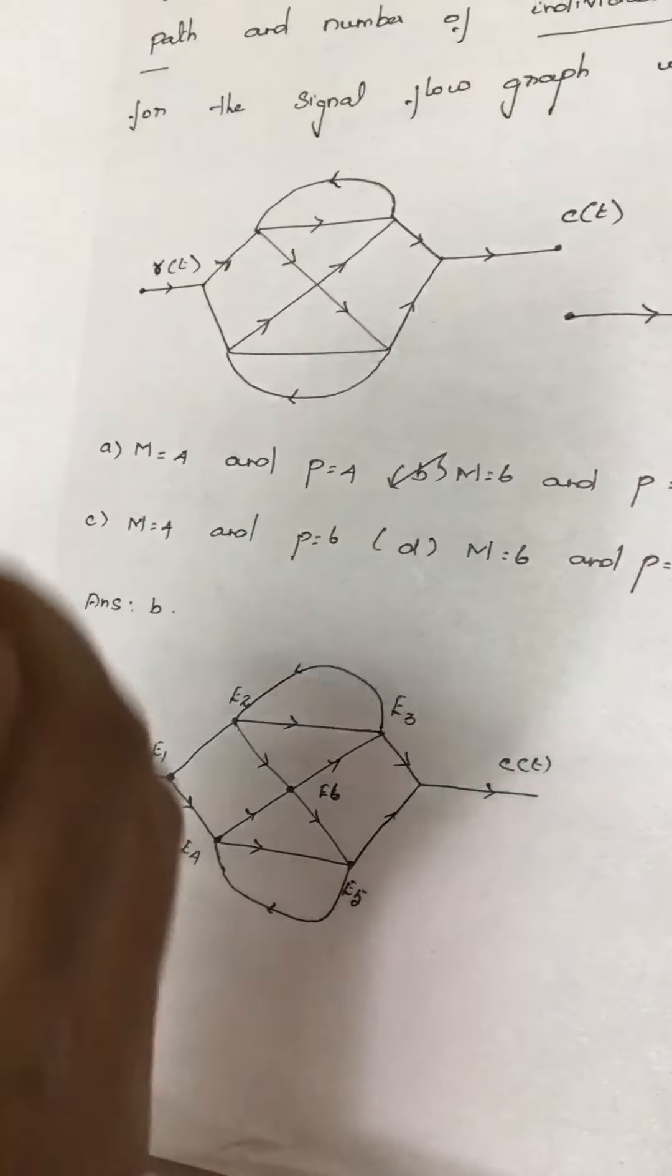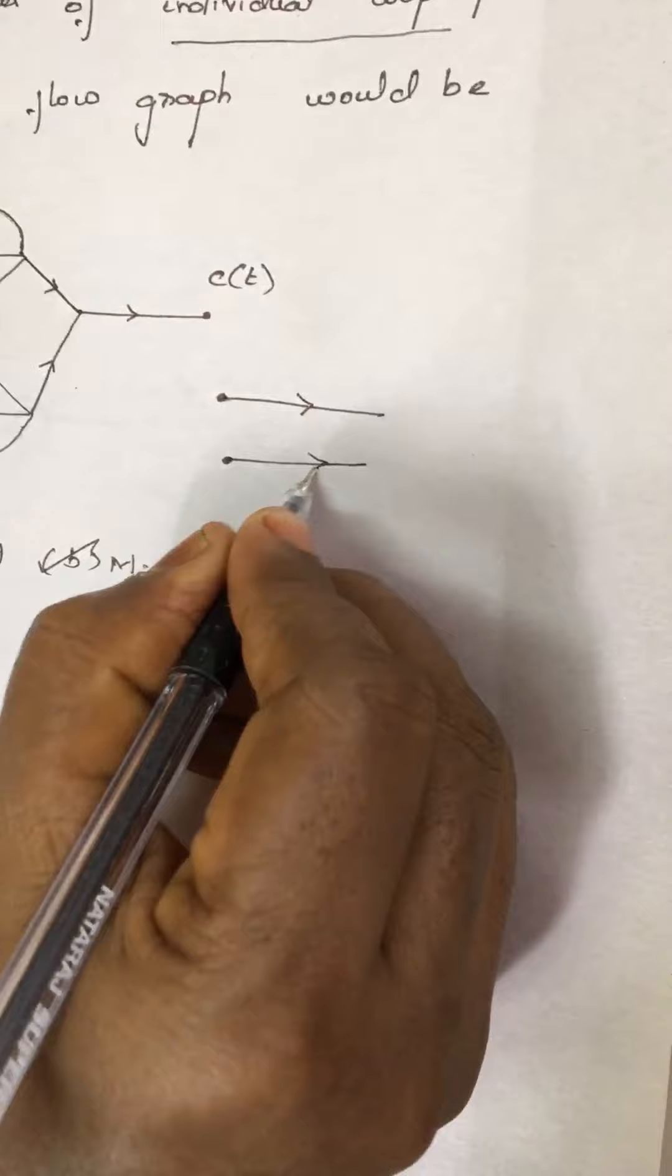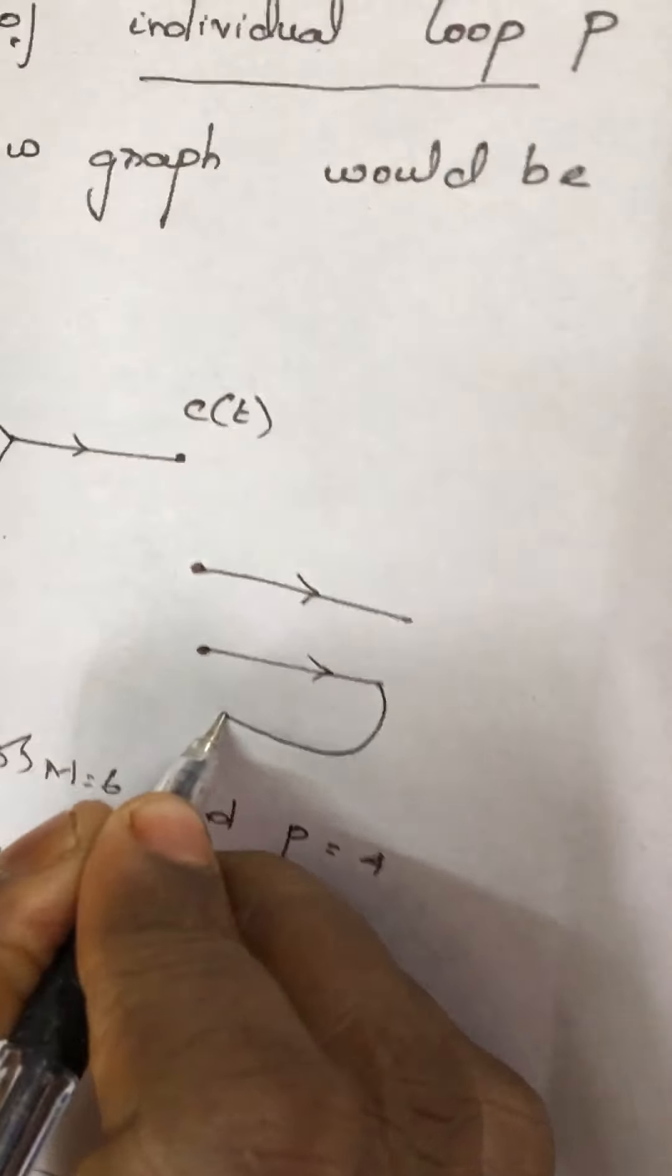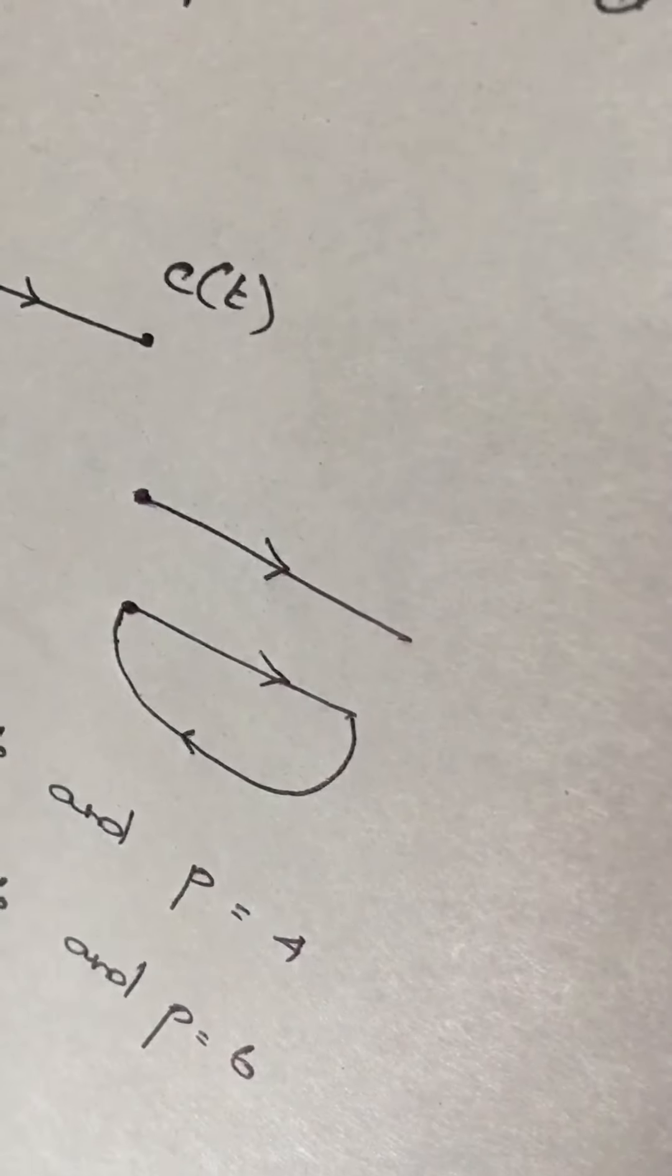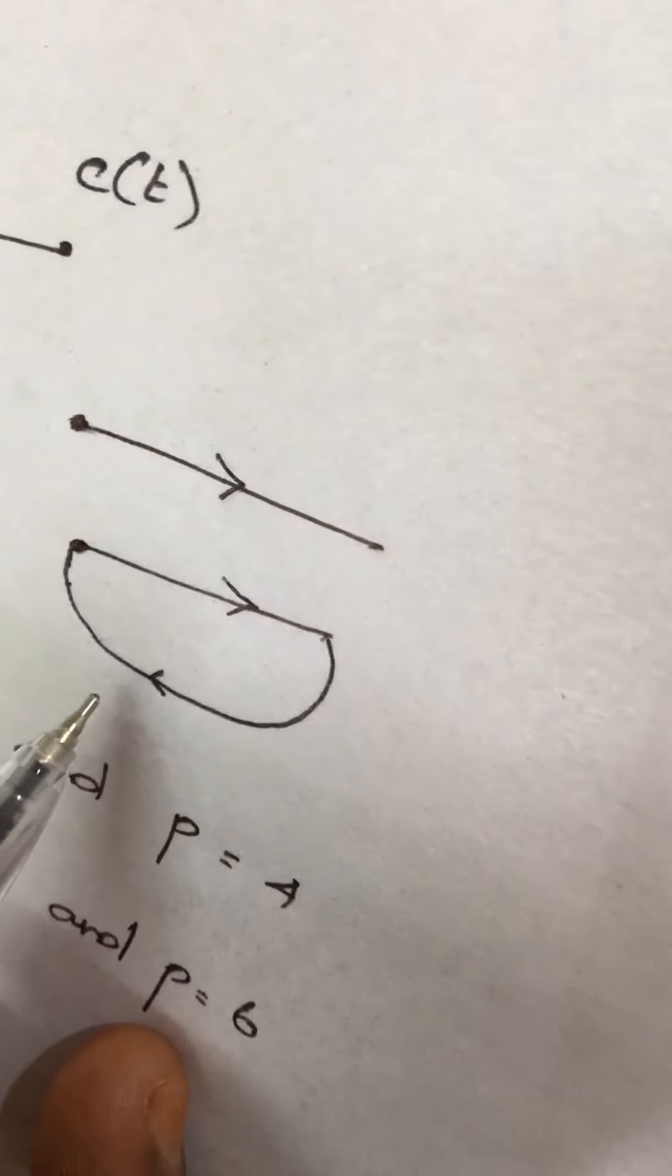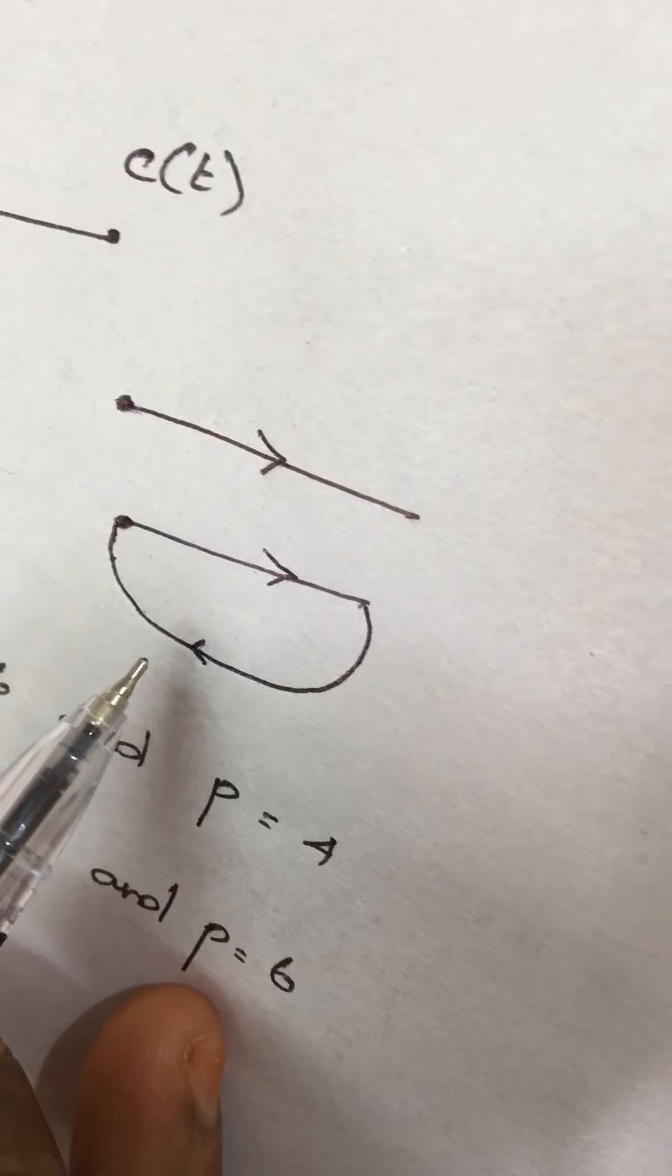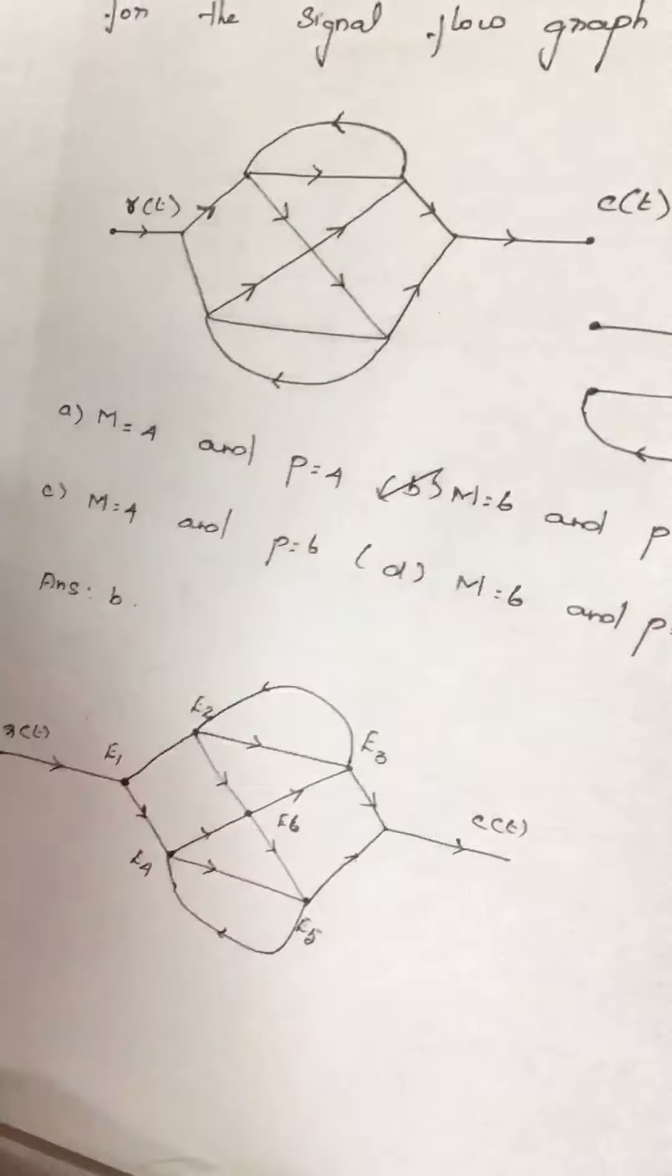And what is a closed loop? Anything which starts at one node, moves forward, and returns back to the same node is said to be a loop. We need to find out the forward paths and the loops which are present in this shown diagram.